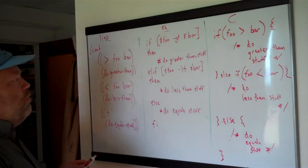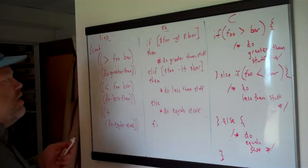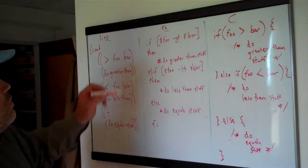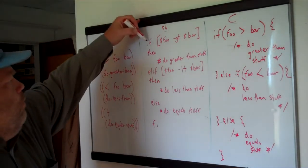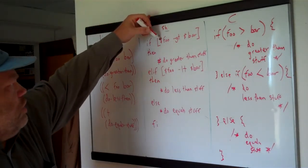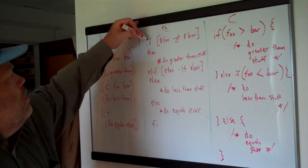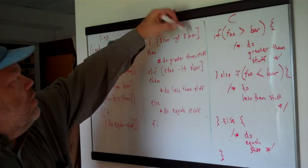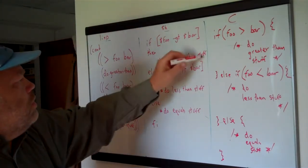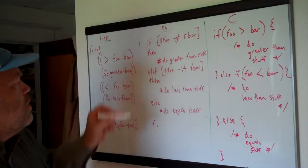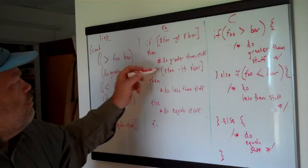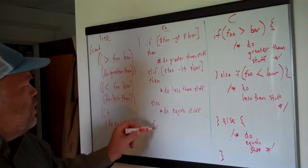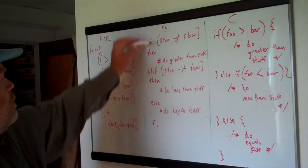I've written it up here in a couple of other languages just to show how you get the same sort of thing. Even though you have different syntax, in high-level languages you tend to get the same sort of structure. Here in shell, we have: if $foo is greater than $bar — in shell, variables have dollar signs in front of them — then do the greater than stuff. That's just a comment to represent the work. Elif stands for else if: if foo is less than bar, do the less than stuff. Then else, do the equal stuff, and you end with fi — that's the end of an if statement in shell.